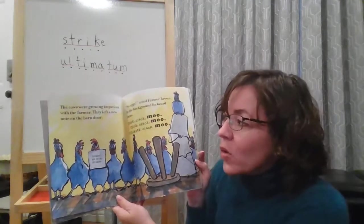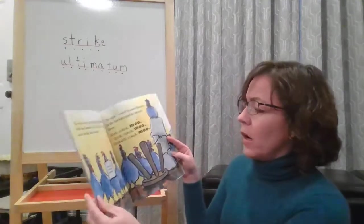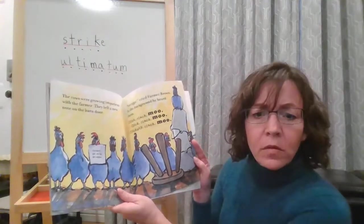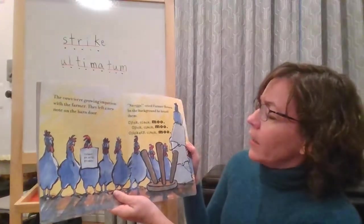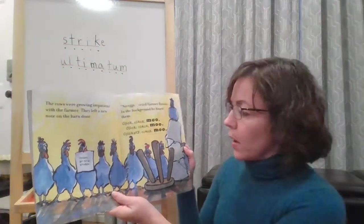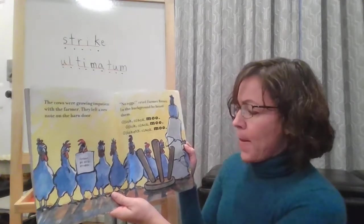The cows were growing impatient with the farmer. They left a new note on the barn door. Closed. No milk. No eggs. No eggs, cried Farmer Brown. In the background, he heard them. Click Clack Moo. Click Clack Moo. Click Clack Moo. Clickety Clack Moo.